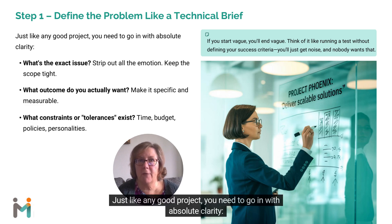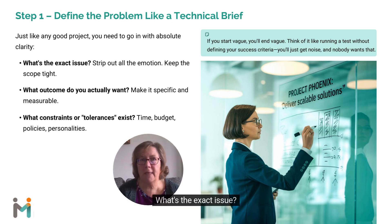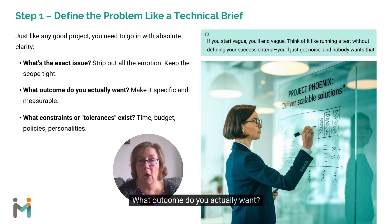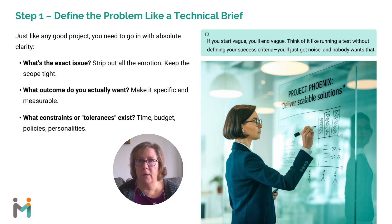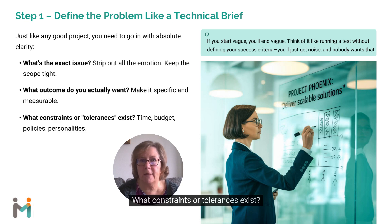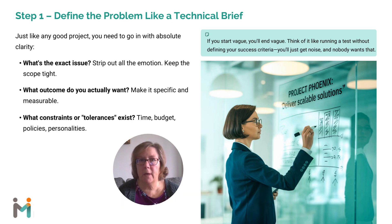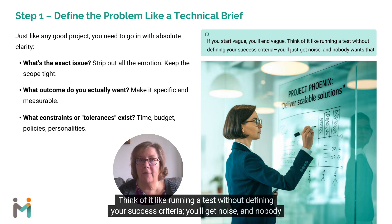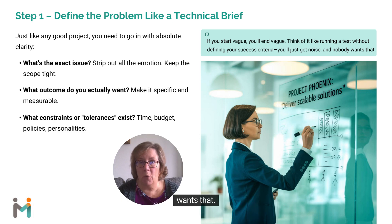Just like any good project, you need to go in with absolute clarity. What's the exact issue? Strip out all the emotion and keep the scope tight. What outcome do you actually want? Make it specific and measurable. What constraints or tolerances exist — time, budget, policies, personalities? If you start vague, you'll end vague. Think of it like running a test without defining your success criteria: you'll get noise, and nobody wants that.